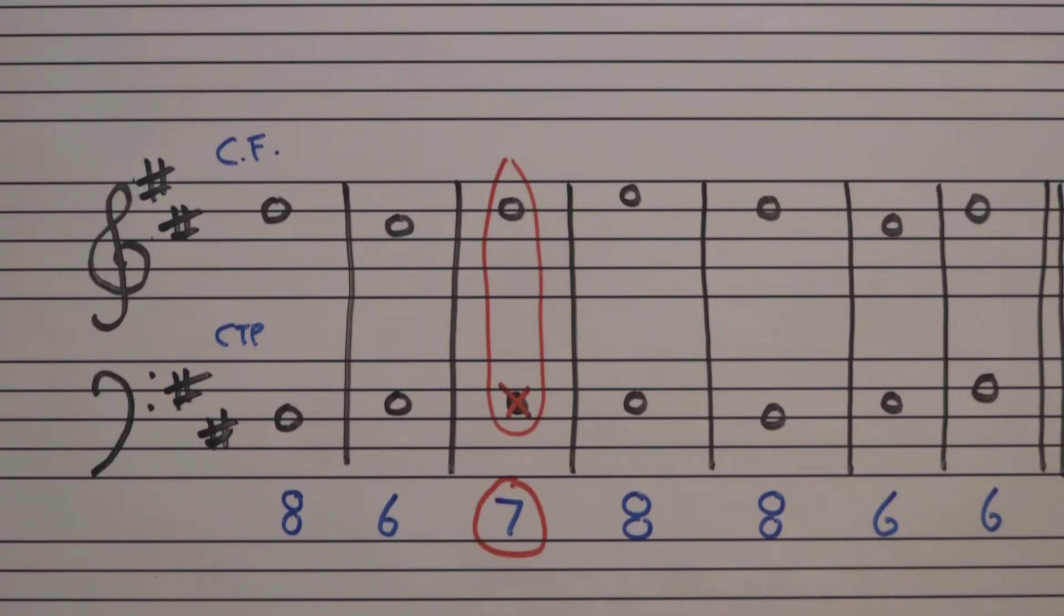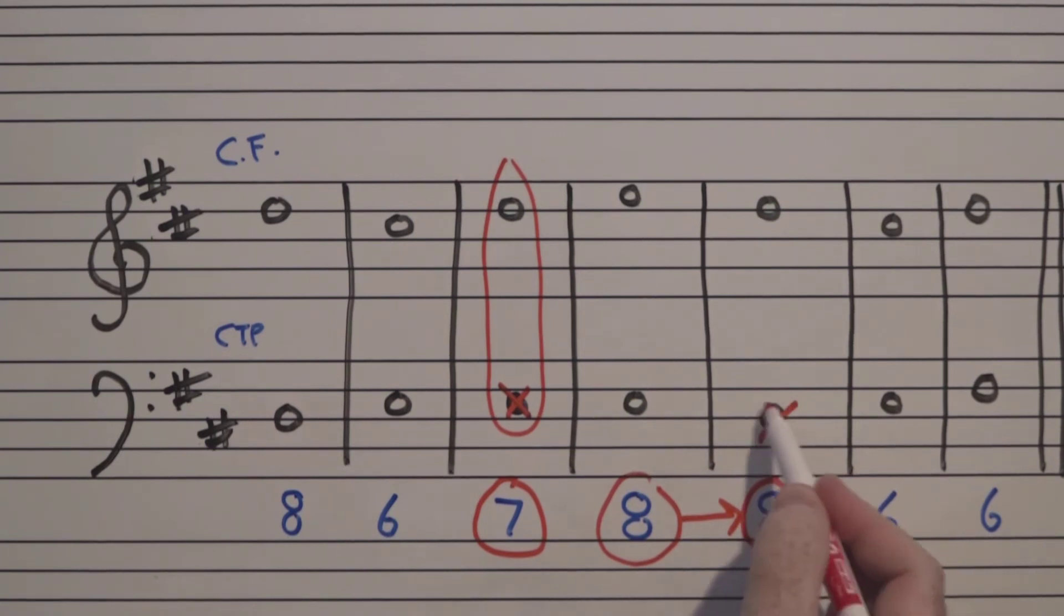In other words, what they're saying is you don't want to set up a sixth here and just do sixths all the way to the end. That's a relatively severe mistake. A bigger mistake is going to be having two consecutive fifths or octaves. Now you can go from fifth to octave or vice versa, but do not go from octave to octave.